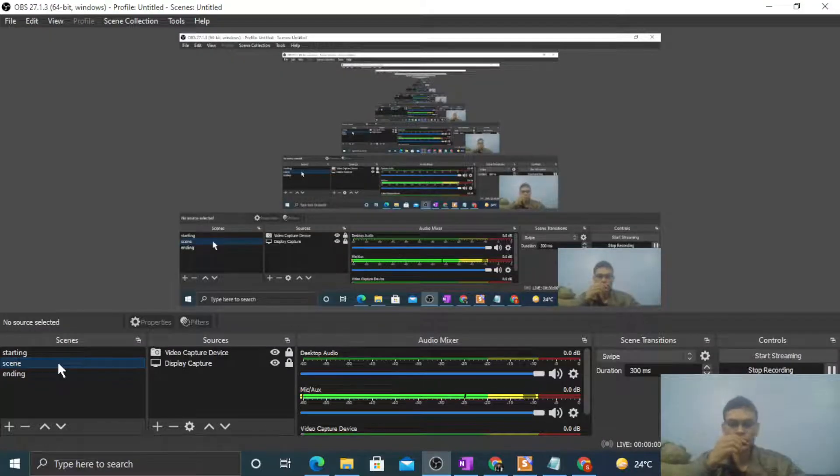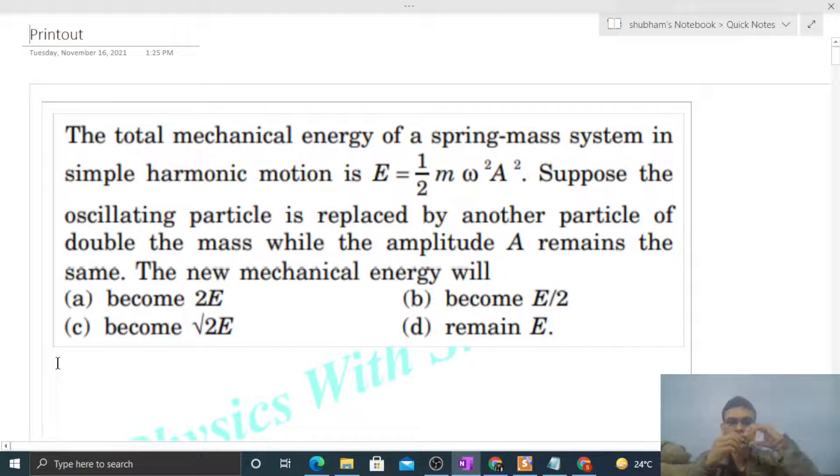Hi everyone, today let's discuss an interesting problem. The total mechanical energy of a spring-mass system in simple harmonic motion is E = (1/2)mω²A². Suppose the oscillating particle is replaced by another particle of double the mass while the amplitude remains the same. What will be the new mechanical energy?